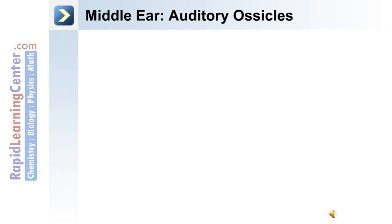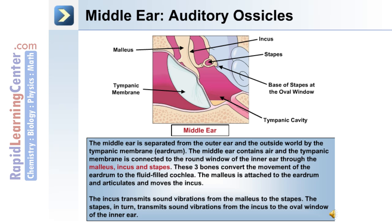Now we'll move on to discuss the anatomy of the middle ear, including the auditory ossicles. As depicted in this image, the middle ear is separated from the outer ear by the tympanic membrane. Within the middle ear, the auditory ossicles are the malleus, incus, and stapes. The base of the stapes is at the oval window.